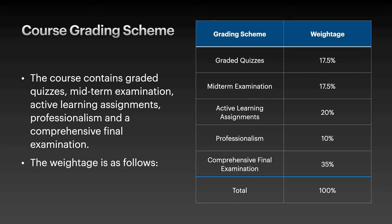The course grading scheme includes graded quizzes, a midterm exam, active learning assignments, professionalism, and a comprehensive final exam. Graded quizzes are conducted throughout the semester on a per-chapter or per-topic basis. The midterm covers about half the syllabus, and active learning assignments contain about 20 percent and are basically lab assessments you will complete and submit as files.